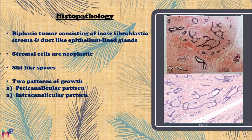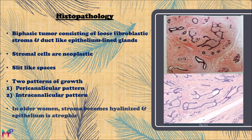In the pericanalicular pattern of growth, the epithelium is surrounded by the stroma. In the intracanalicular pattern, the epithelium is compressed by the stroma. In both pictures shown here, the pattern of growth is intracanalicular. In older women, the stroma becomes hyalinized and the epithelium is atrophic, due to lower estrogen levels leading to epithelial atrophy and stromal hyalinization.